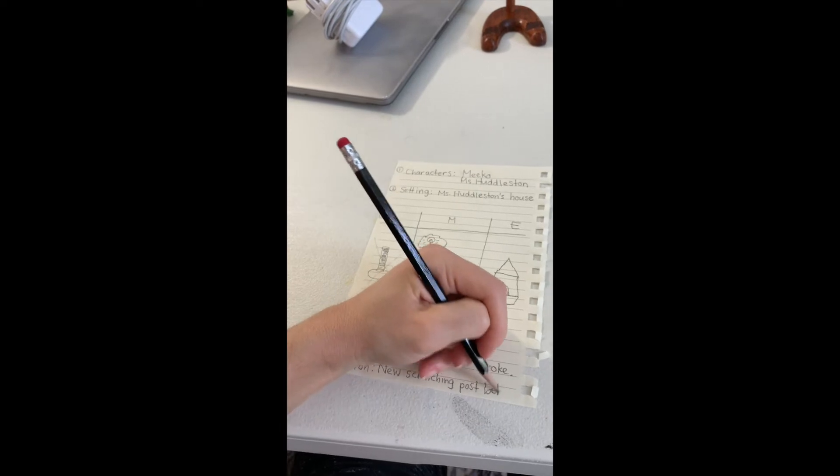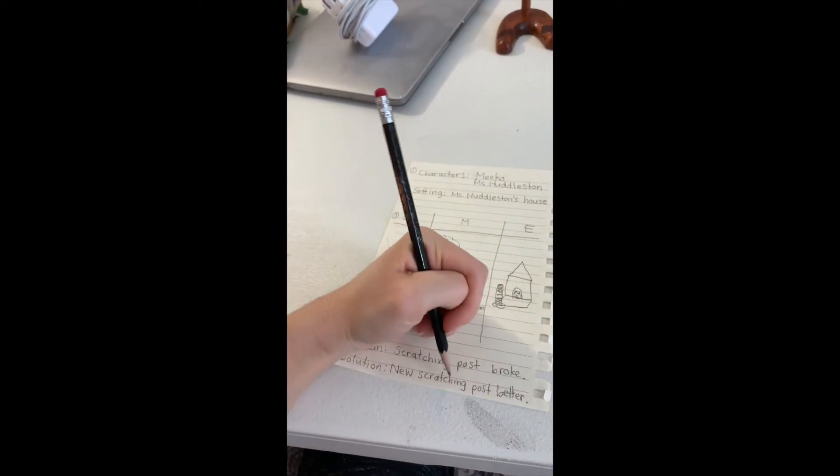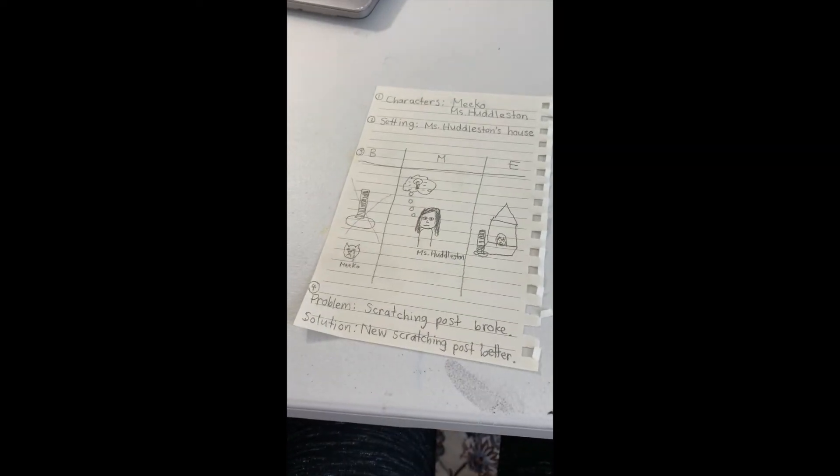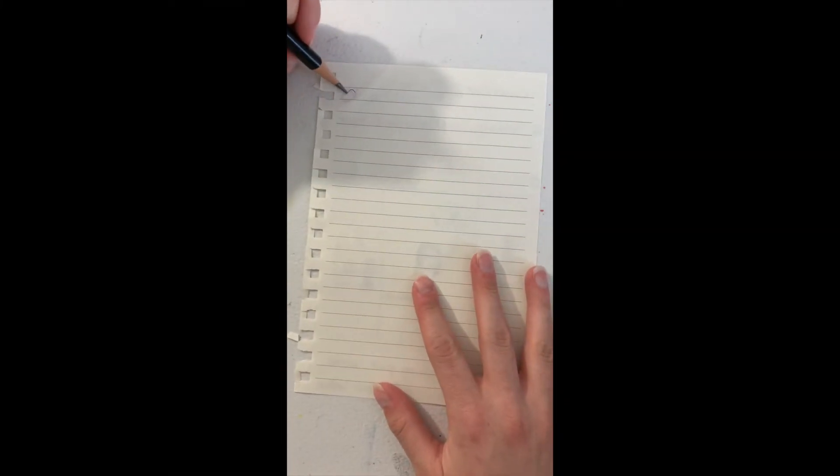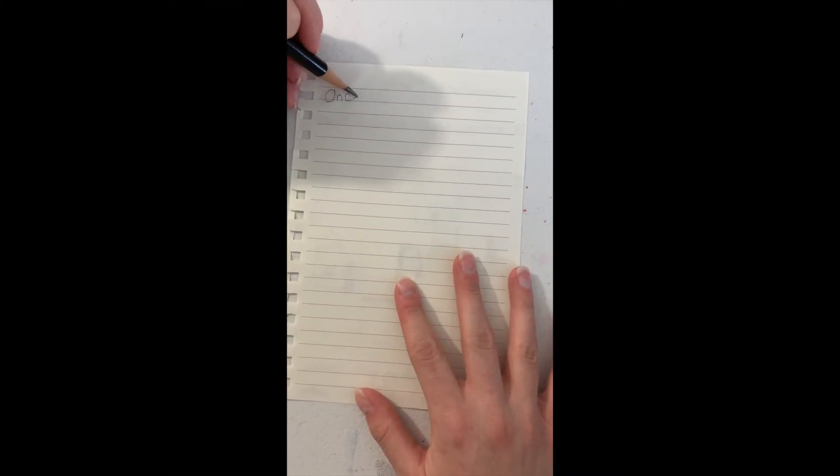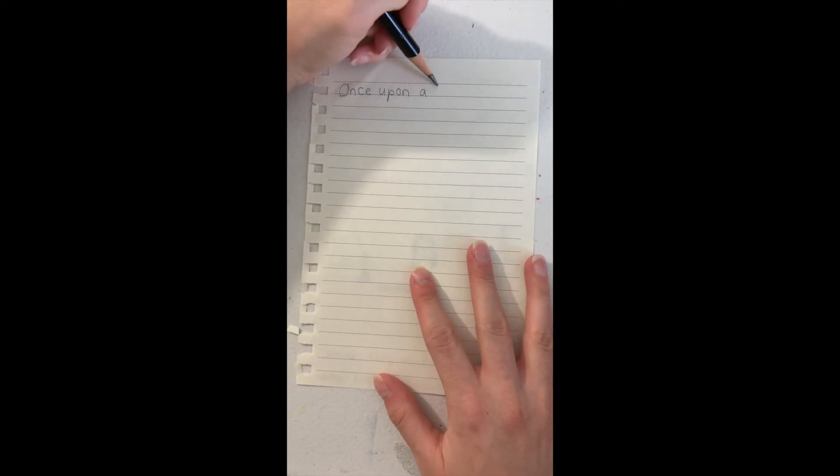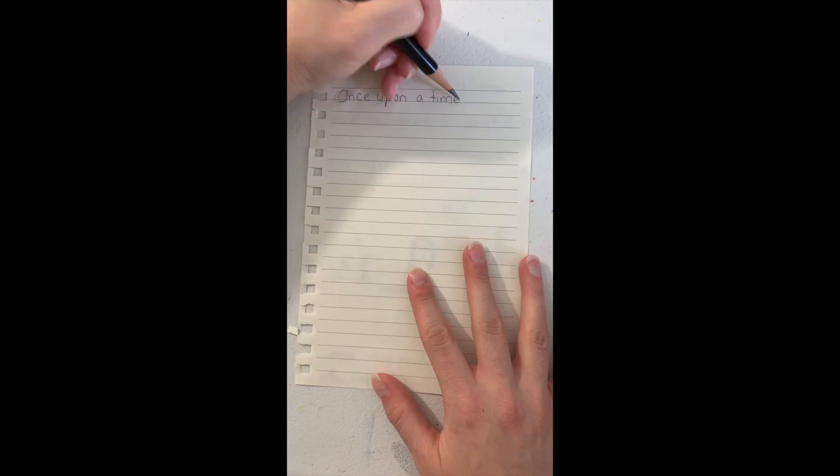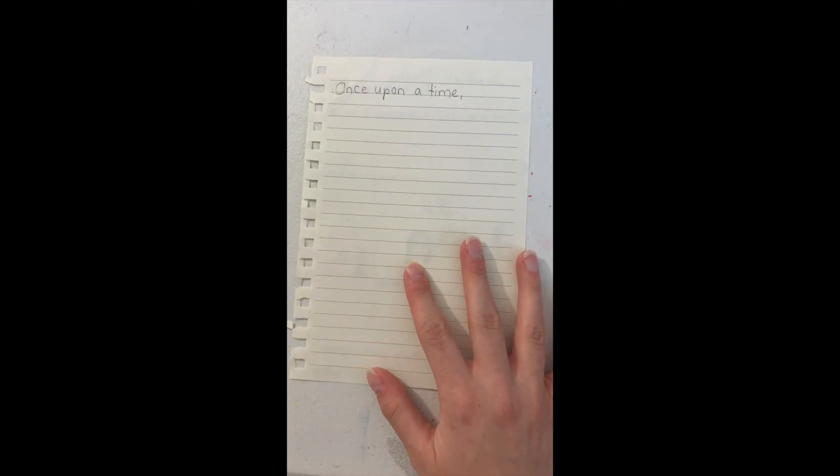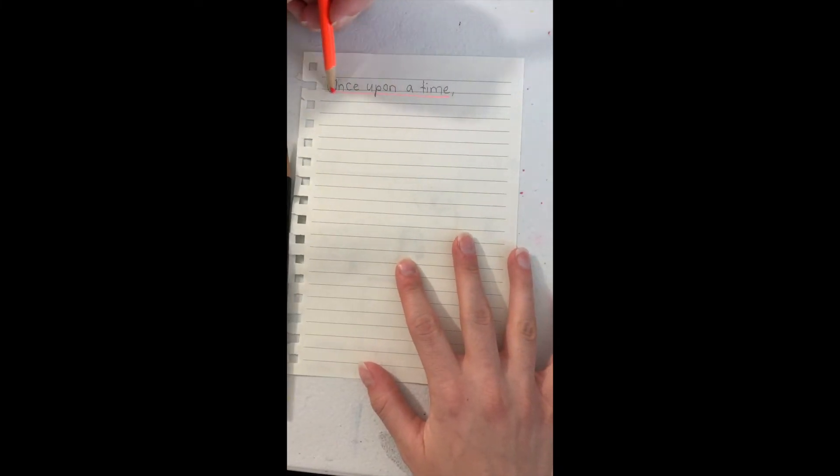Now, I have all the important details to begin writing my story. All good stories start with an opening like, once upon a time, or one day. So, I'm going to start this story with once upon a time. Here, I'm writing it right at the beginning.